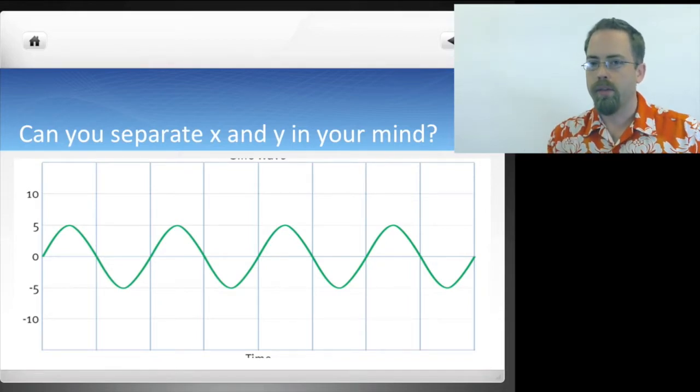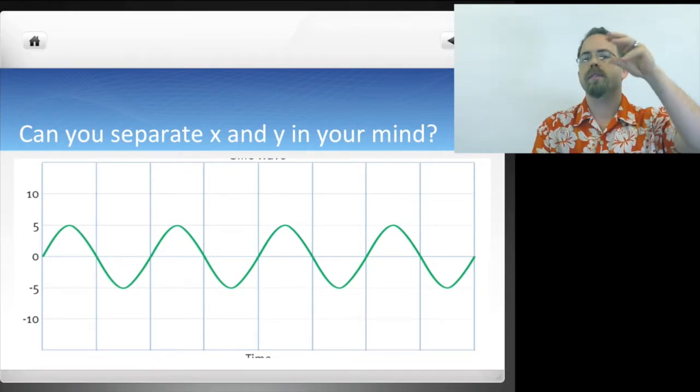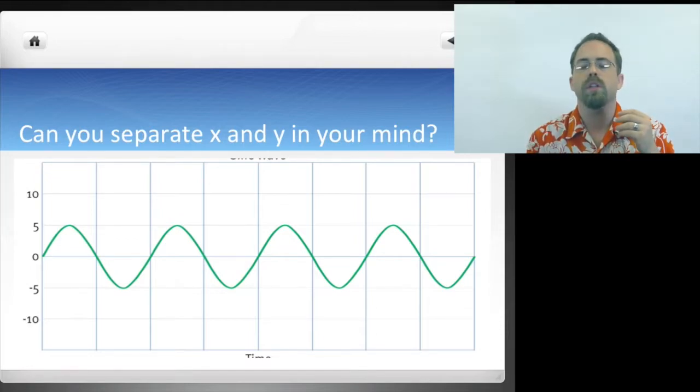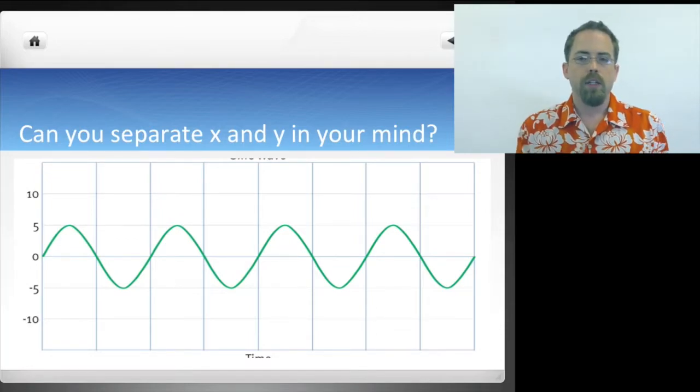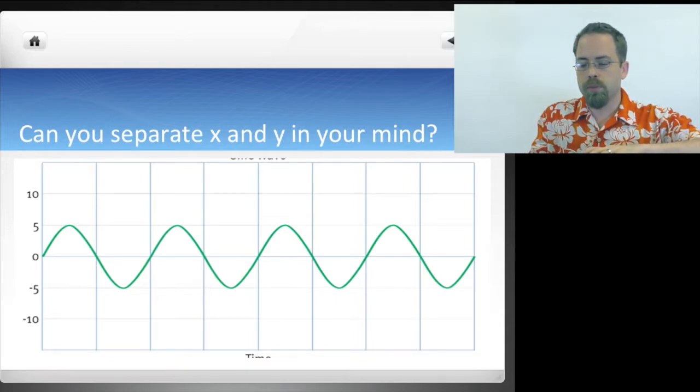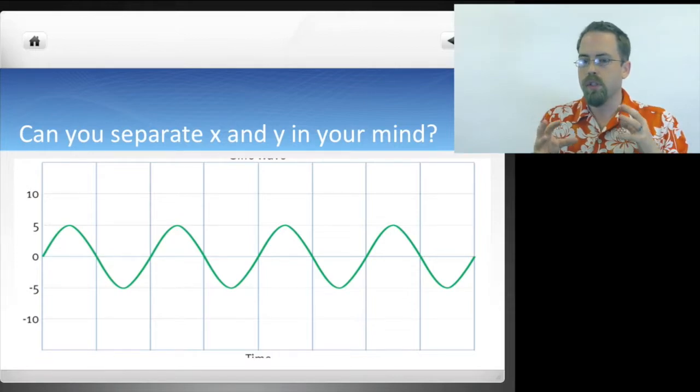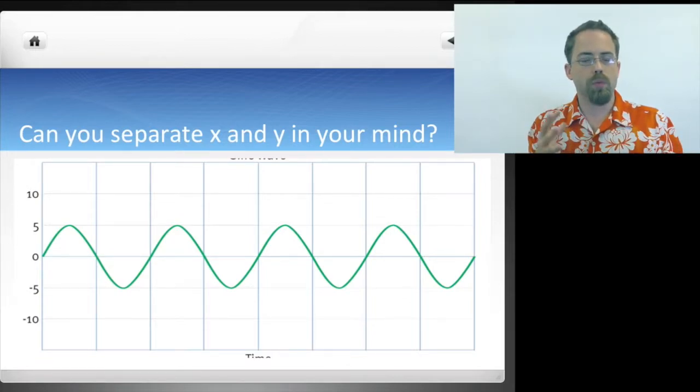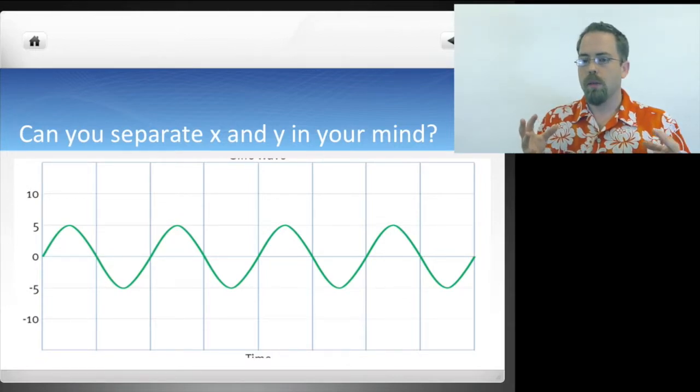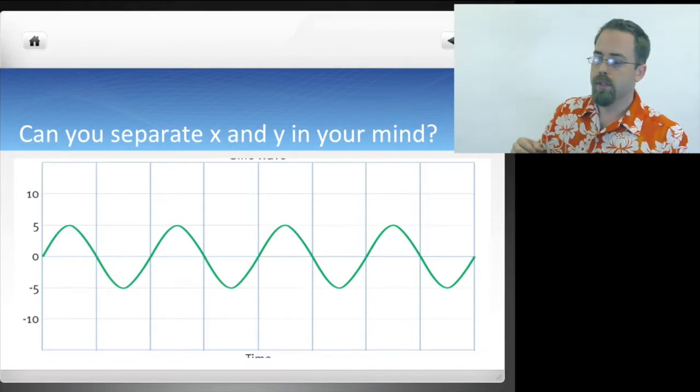It's only the Y values that are doing the sine thing going from 0 to 1, then 0 to negative 1, like that. So if we think about this in terms of pulling them apart, we'll start to see, oh, these things that we thought were pretty complicated, maybe only one part of it is complicated.